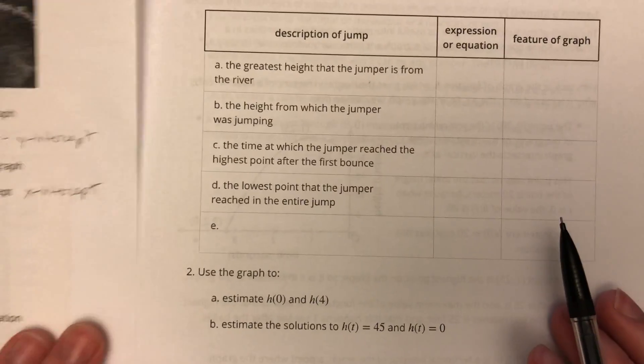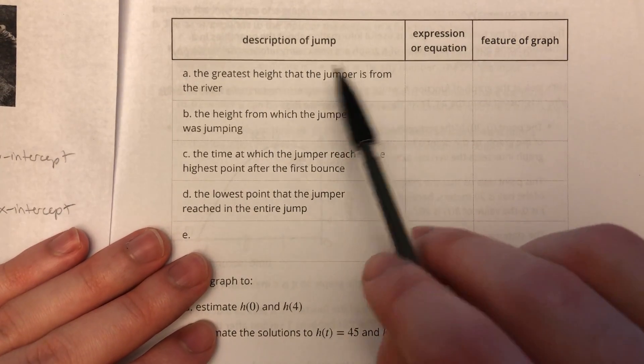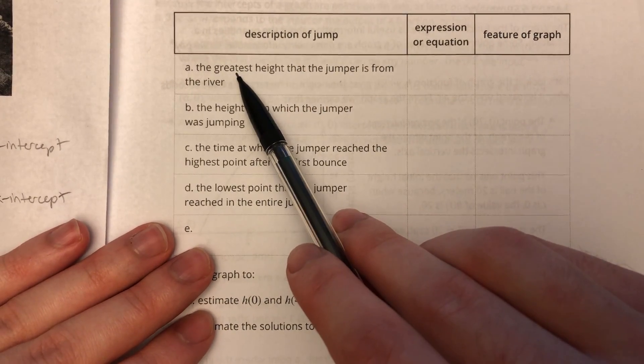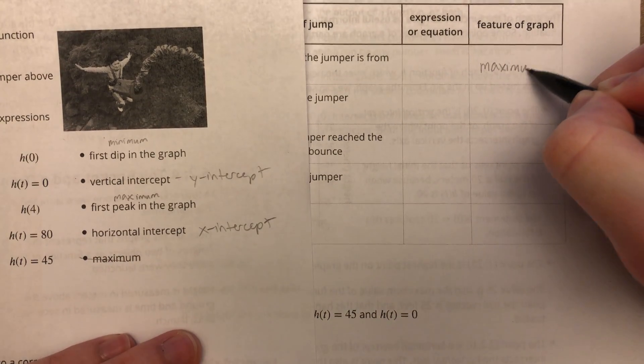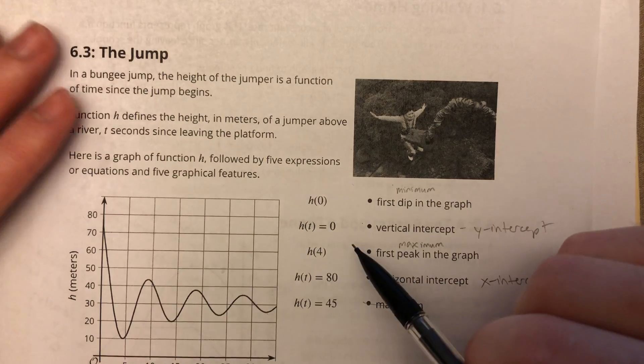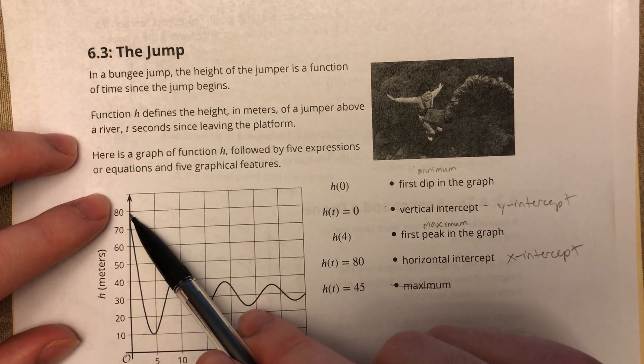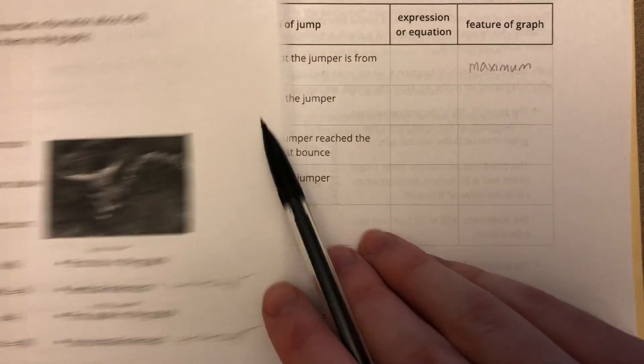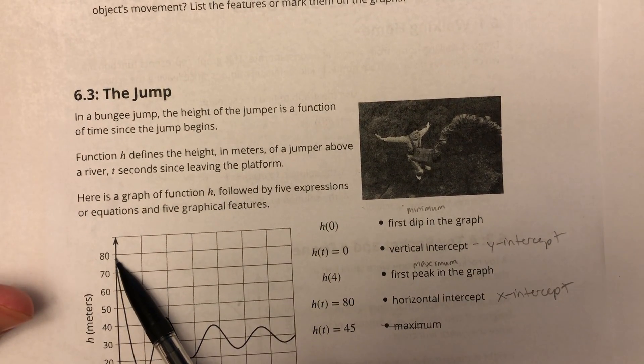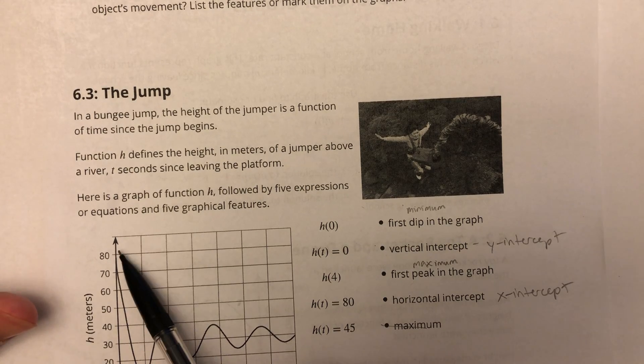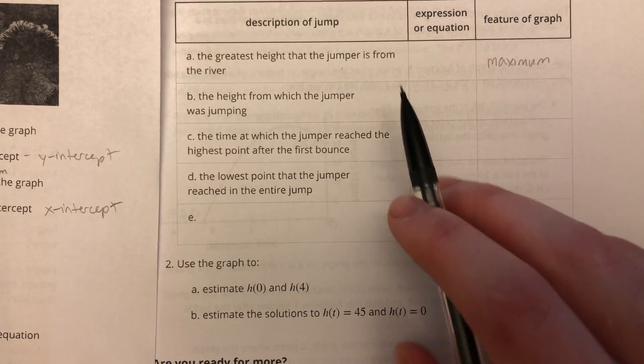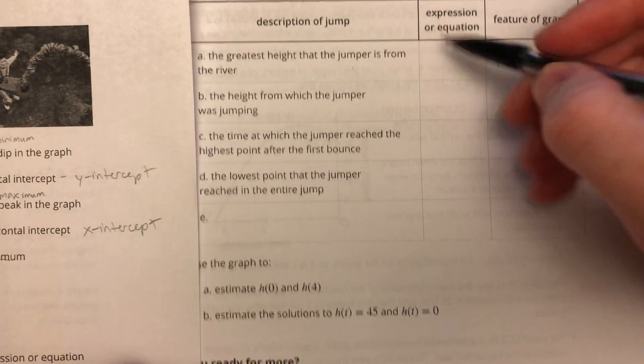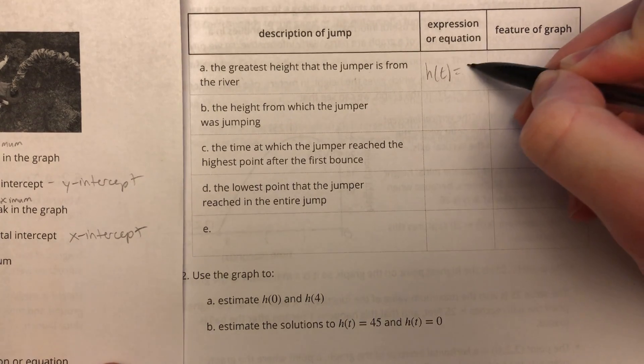Alright, so let's go through the descriptions. So A says the greatest height that the jumper is from the river. Well, when I hear the greatest, that makes me think of the word maximum. So they're talking about this bullet right here, maximum. So which of these expressions would be the maximum? Well, if I look at this maximum right here, I can see that the greatest height that the jumper is from the river, that would be this point right up here, h of t is 80. We don't have any point higher than that. That is the highest point. If we're talking about the greatest height, then that would definitely be 80 feet. So h of t equals 80.